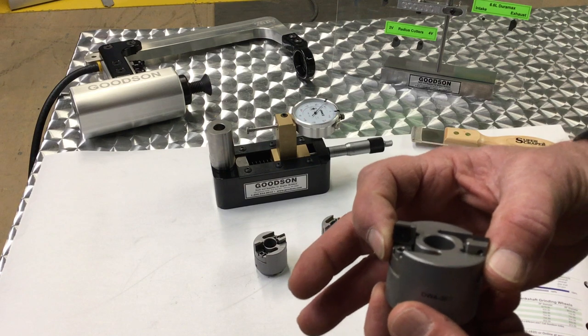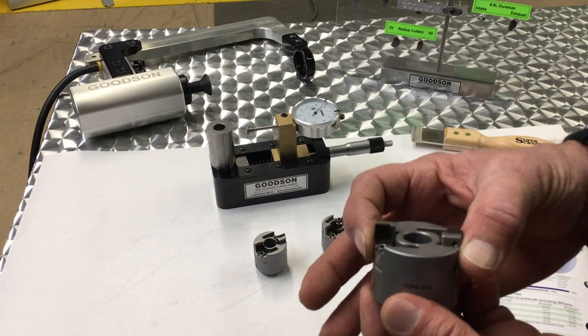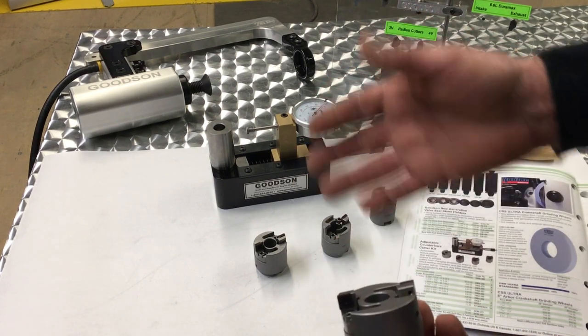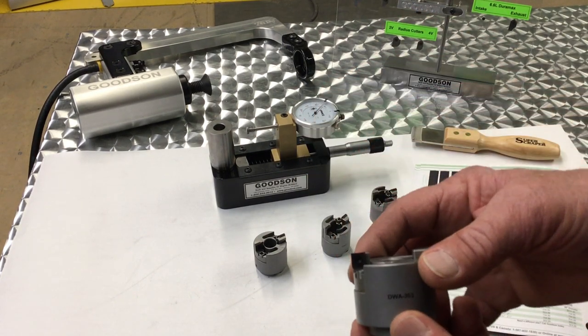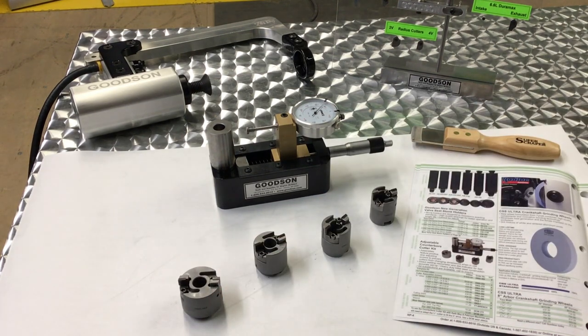So when you're counter boring your cylinder heads, you don't have to worry about going oversize or undersized. This is our DWA 300, we're very proud to offer it to you, our valued customers. Thank you.